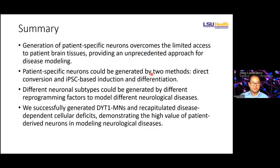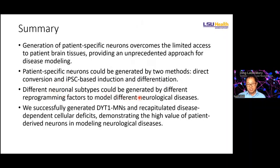In summary, the generation of patient-specific neurons can overcome limited access to patient brain tissues, providing an unprecedented approach for disease modeling. Patient-specific neurons can be generated by two methods: direct conversion or the iPSC-based approach. Different neuron subtypes can be generated by delivering different reprogramming factors. For DYT1 dystonia motor neurons, we recapitulate disease-dependent cellular deficits including morphology changes, developmental changes, and nucleocytoplasmic transport changes. We also identified mislocalized nuclear proteins that may contribute to the pathogenesis of this disease.